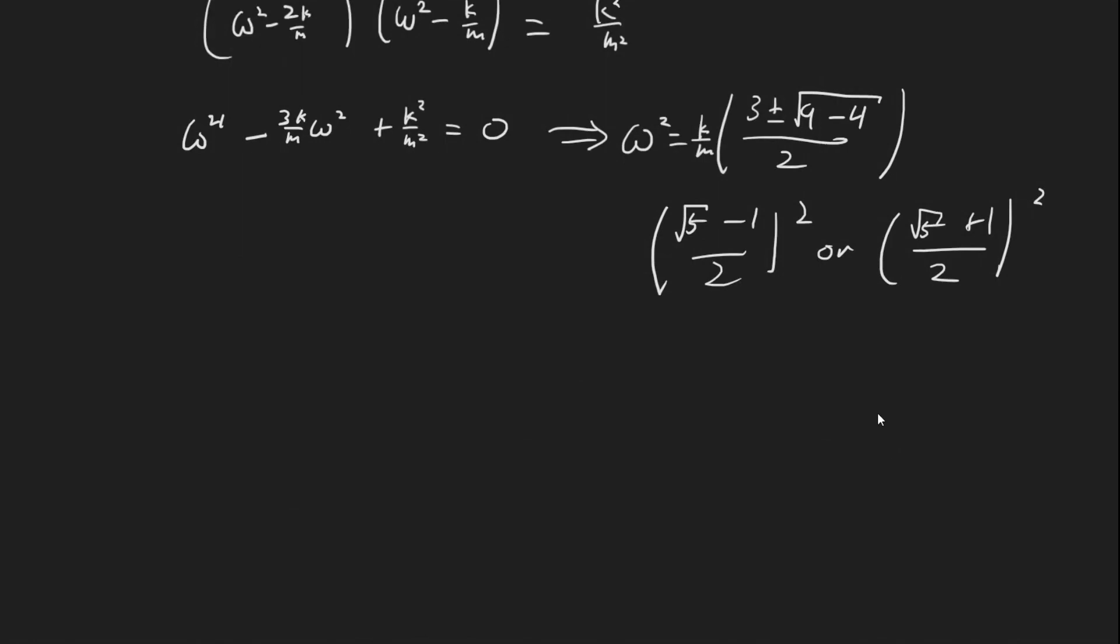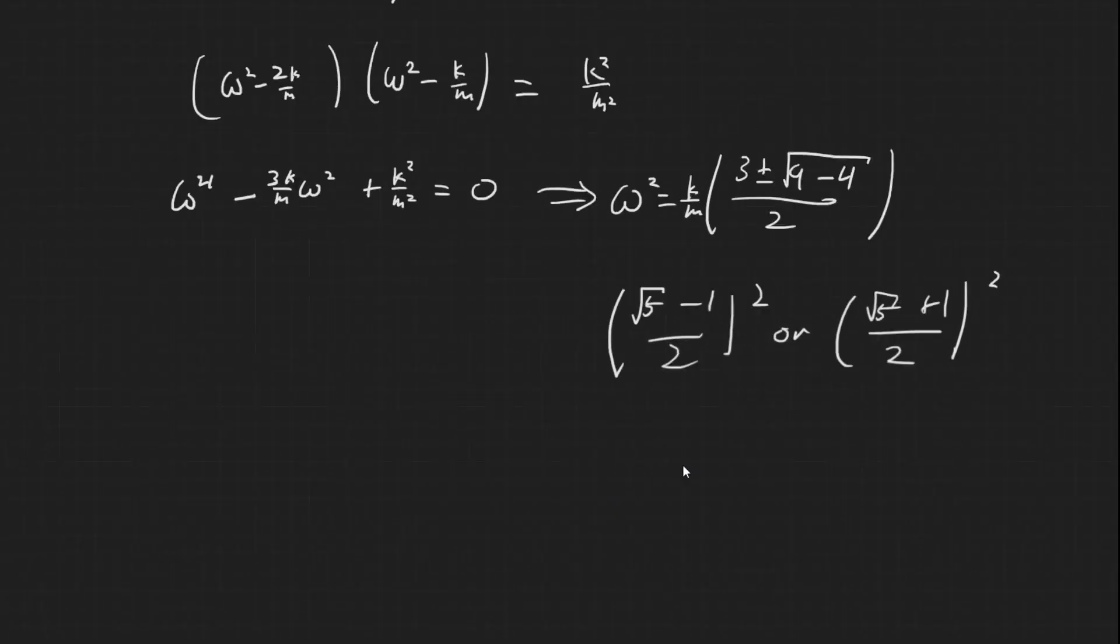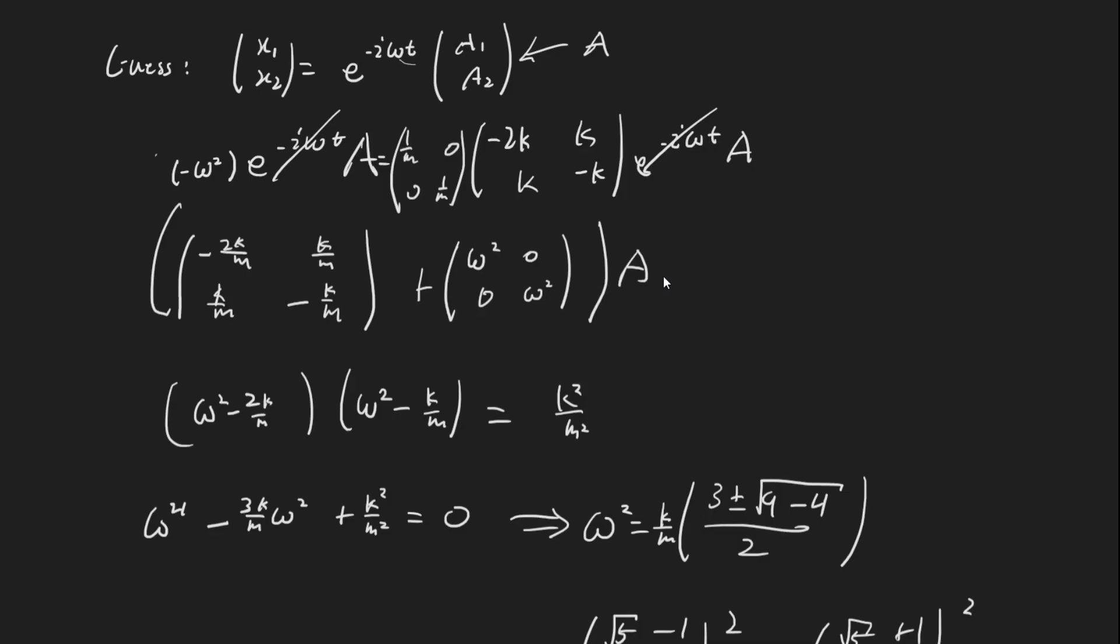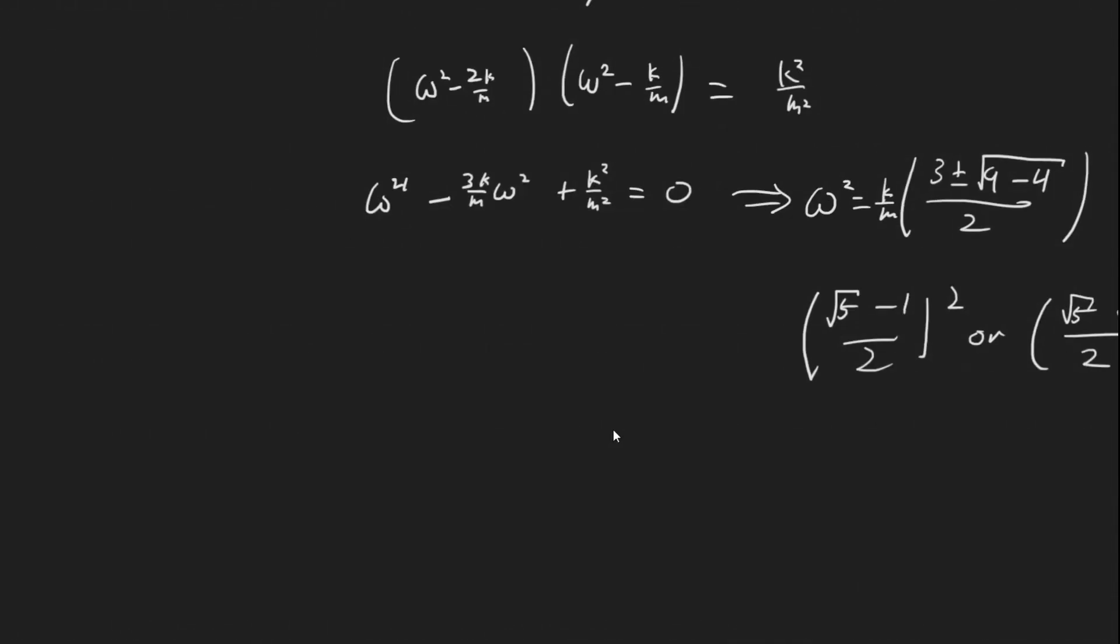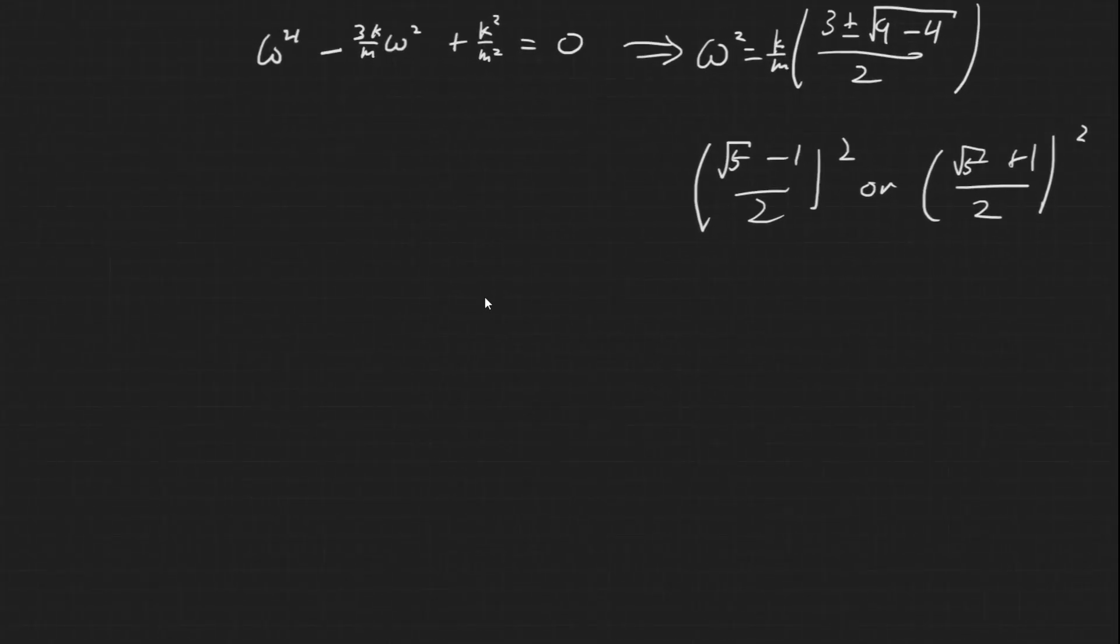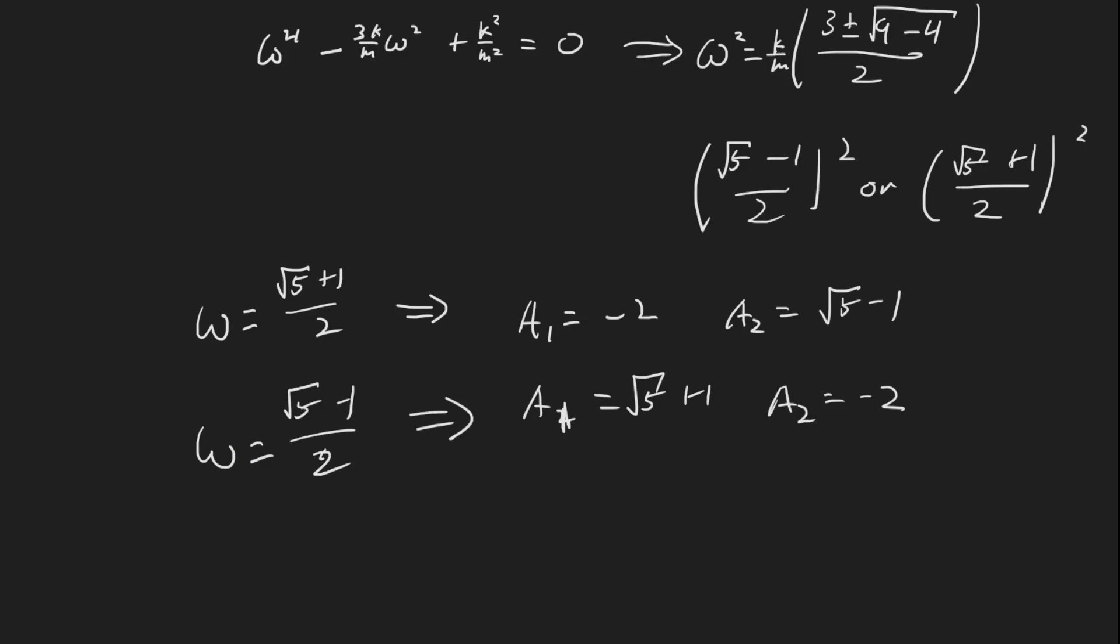And now all we need to do to solve for the normal modes here is plug these values back in into the matrix here, and then figure out what the, determine what A needs to be. And that's a bit boring, and it's pretty routine, and it basically just gives, if omega is equal to root 5 plus 1 over 2, solving just gives a1 equals, I believe, I think it should be negative 2 and root 5 plus 1, and yeah, it's negative 2 and root 5 minus 1. So a2 equals root 5 minus 1, and then the other one is going to be a1 equals root 5 plus 1, and a2 equals negative 2.